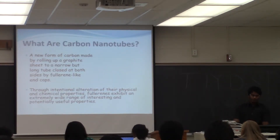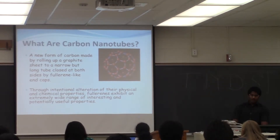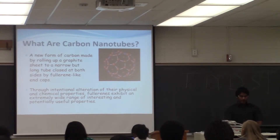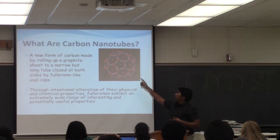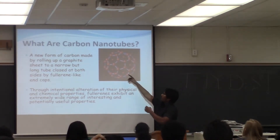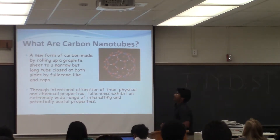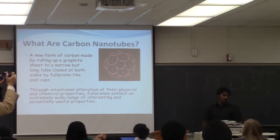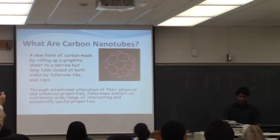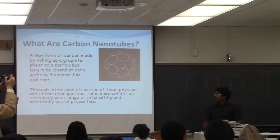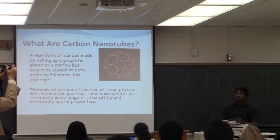What exactly are carbon nanotubes? A new form of carbon made by rolling up a graphite sheet — graphite is made up of carbon — to a narrow but long tube, closed at both sides by fullerene-like end caps. Fullerene is a molecule of carbons. When closed by carbon, they exist in three different structures: spherical, elliptical, and tubular. Through intentional alteration of their physical and chemical properties, fullerenes exhibit an extremely wide range of interesting and potentially useful properties, and have been widely used in all sectors.